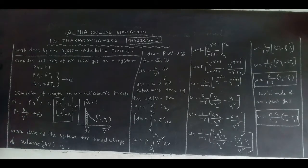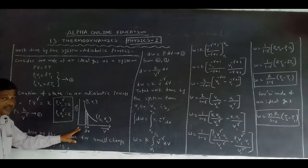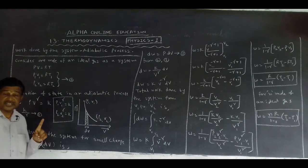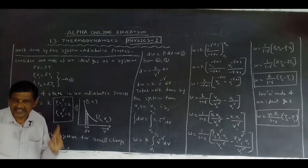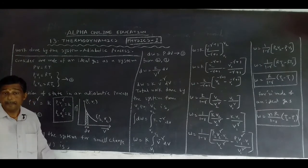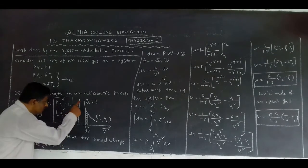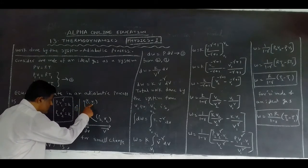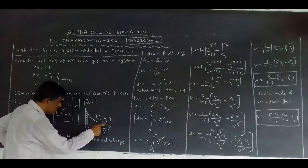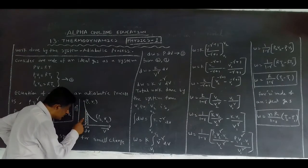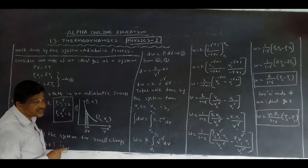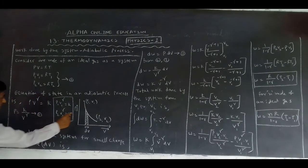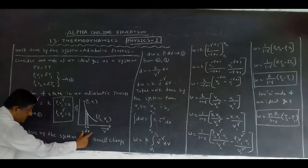From the P-V graph comparing adiabatic and isothermal processes, in an adiabatic process the change in pressure is more but the change in volume is less. Initial pressure is P1 with volume V1; final pressure is P2 with volume V2. We take a small portion of this change denoted by dV — that is the small change in volume.